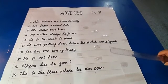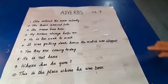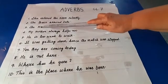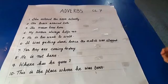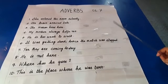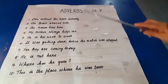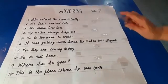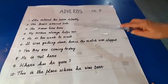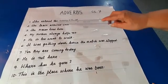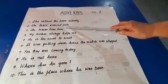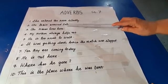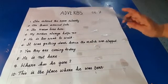Sentence number two: the train arrived late. 'Arrived' is my verb. When did the train arrive? It arrived late. Therefore, when I ask the question 'when' to the verb, I have the answer 'late.' Therefore, 'late' is the adverb in this sentence.